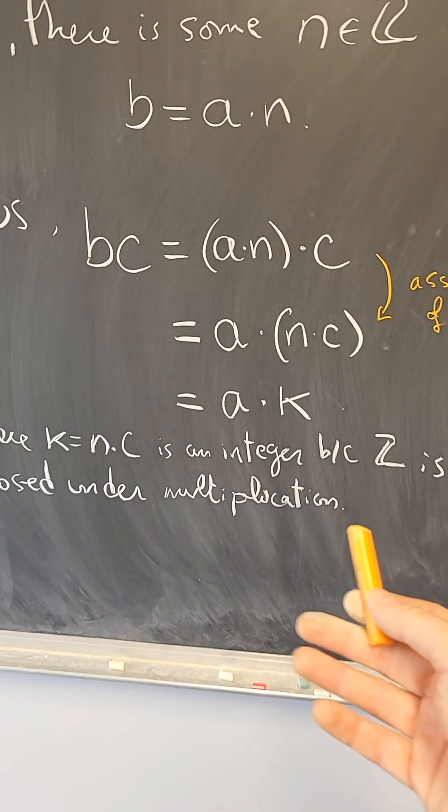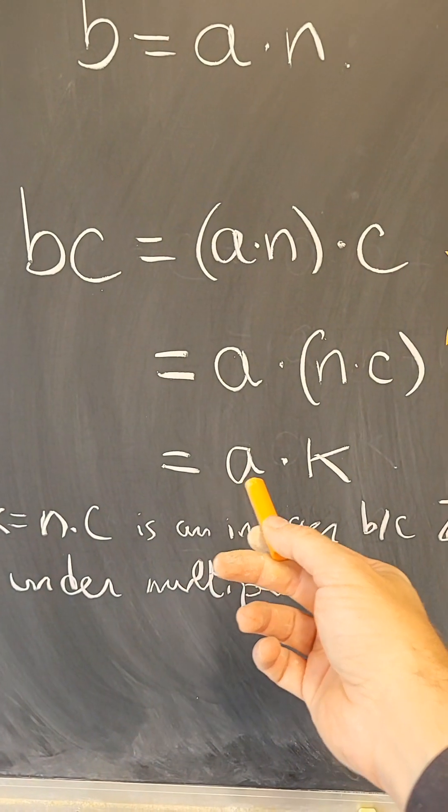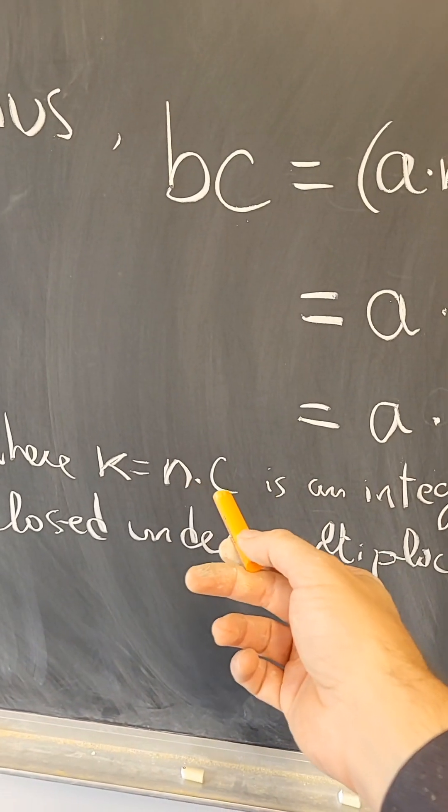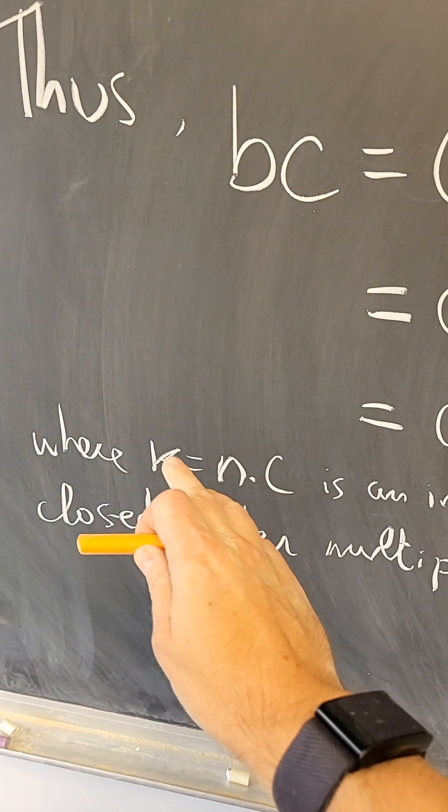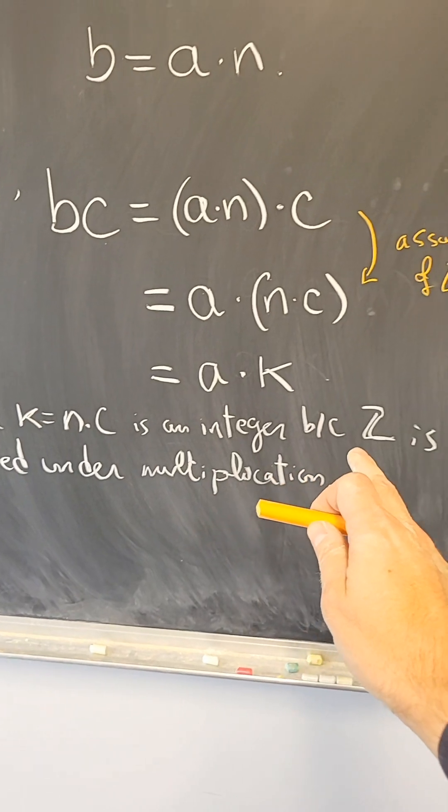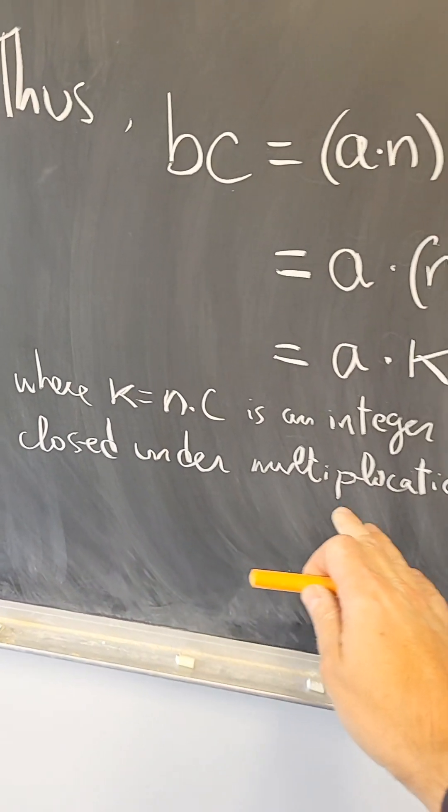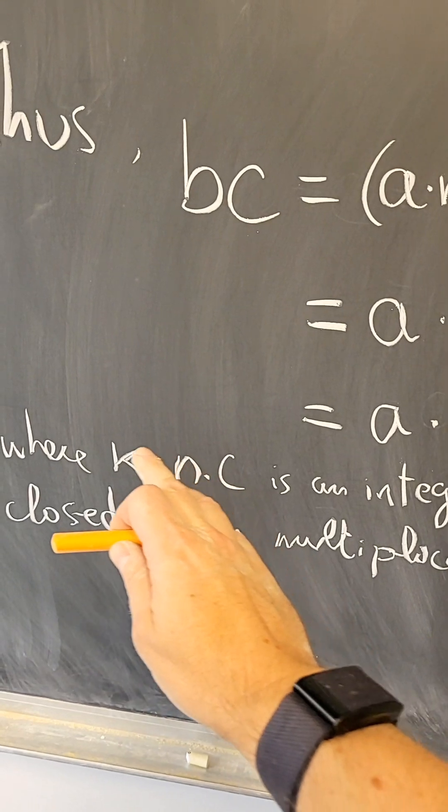Thus, I was able to write BC as A times K, where K is N times C. I have to specify that K equals N times C is an integer because the integers are closed under multiplication—integer times integer is an integer.